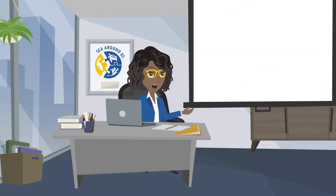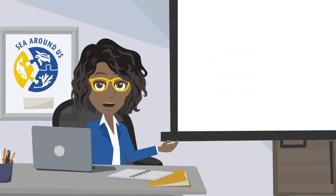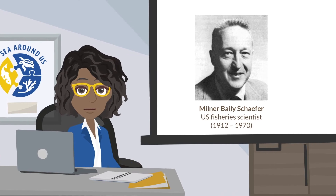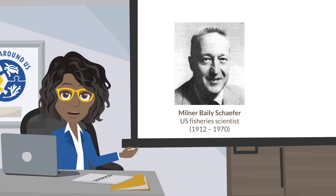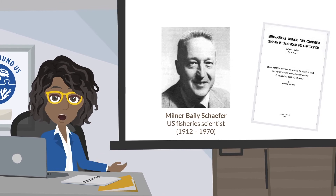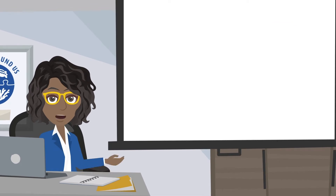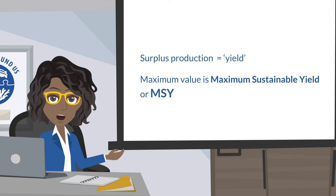First, you need to know about the contributions of three important people. The third scientist you need to know about is Milner B. Schaefer, whose model built on Verhul's logistic curve but with population numbers replaced by population biomass. Also, Schaefer defined surplus production as yield, whose maximum value is maximum sustainable yield, or MSY.